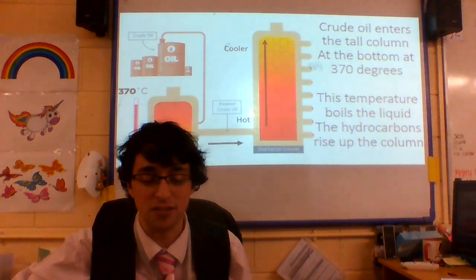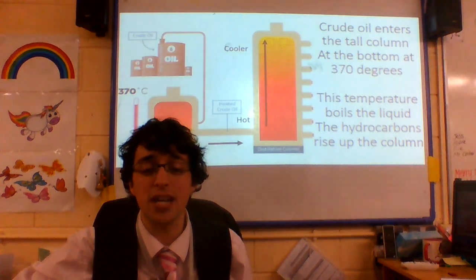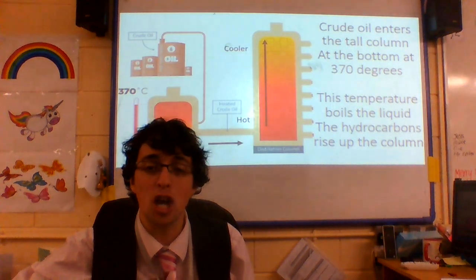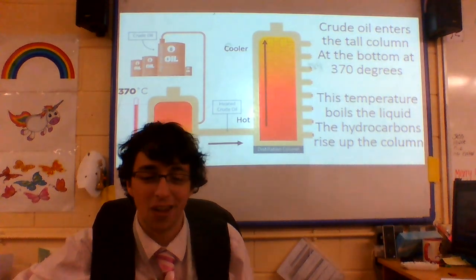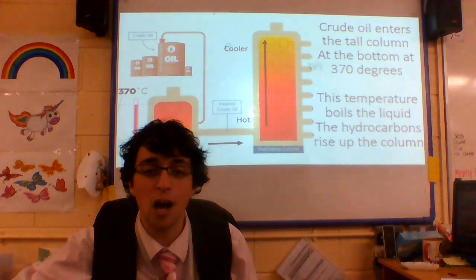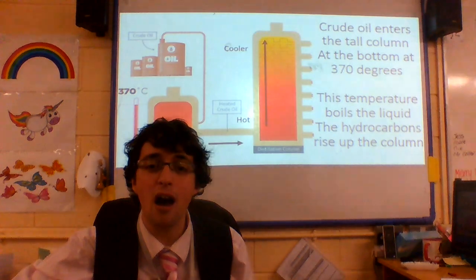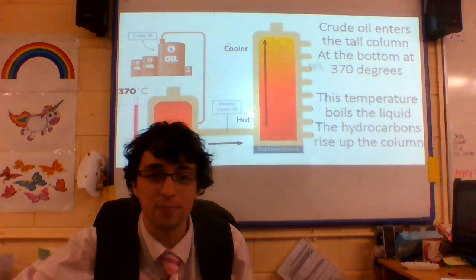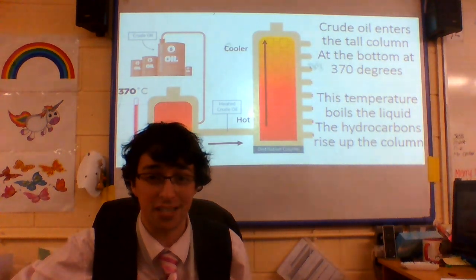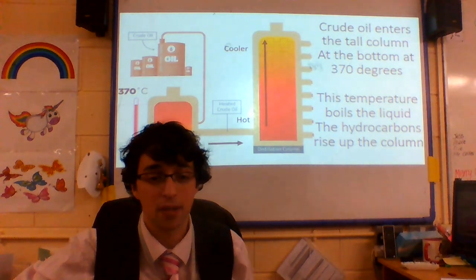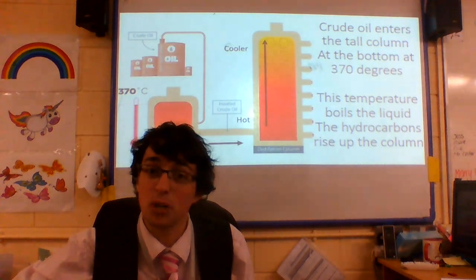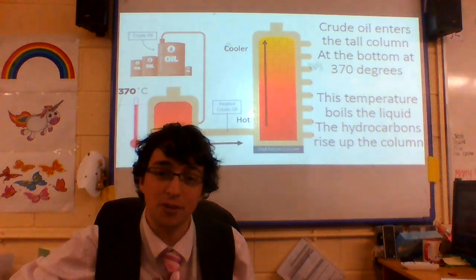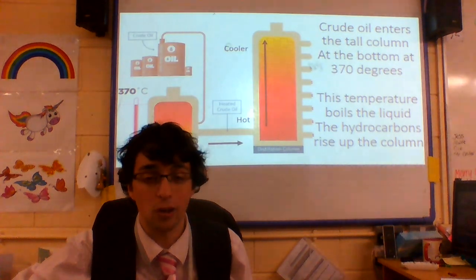Crude oil enters the fractionating column at the bottom at 370 degrees. This temperature boils the liquid and the hydrocarbons rise up the column. This is the first stage of fractional distillation.